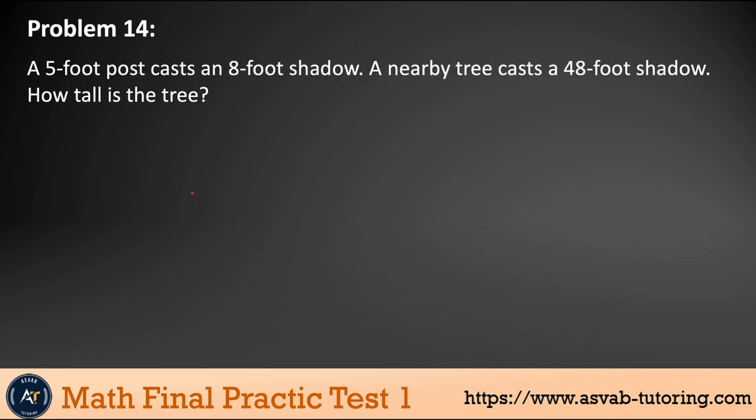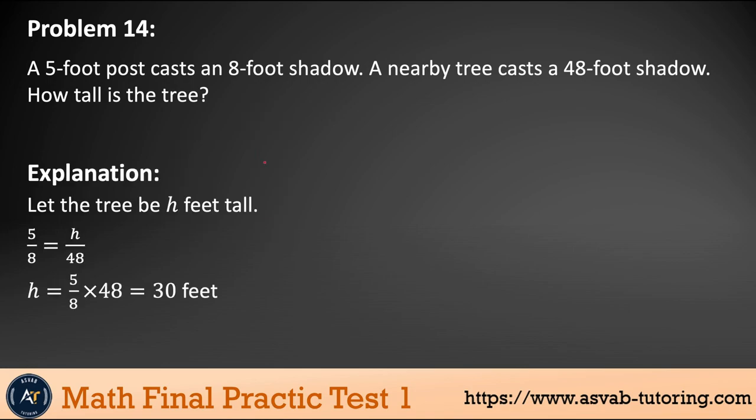Next problem: A five foot post cast eight foot shadow. A nearby tree cast 48 feet shadow. How tall that tree is? Let me show you a picture here. This is that tree—five foot, eight foot shadow. The shadow is always—this is tree, this is shadow. What you could do, you could use a formula. We did before part over whole equal to part over whole. This is all kind of unit price related problem or proportion. You could use this formula to solve. It will really help you.